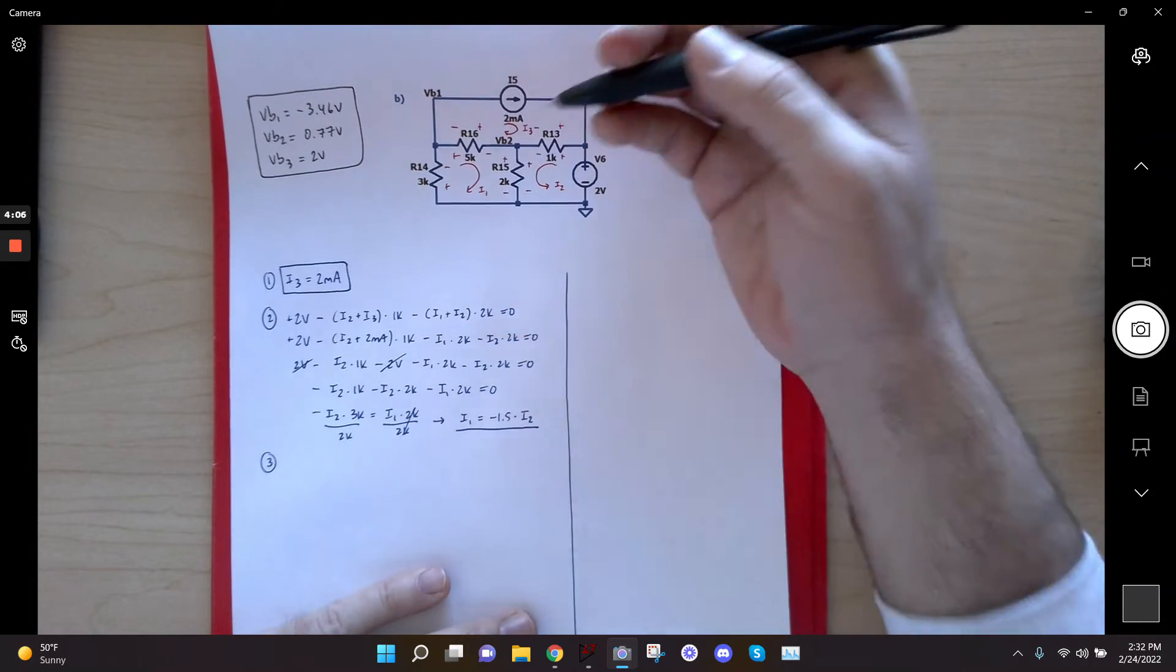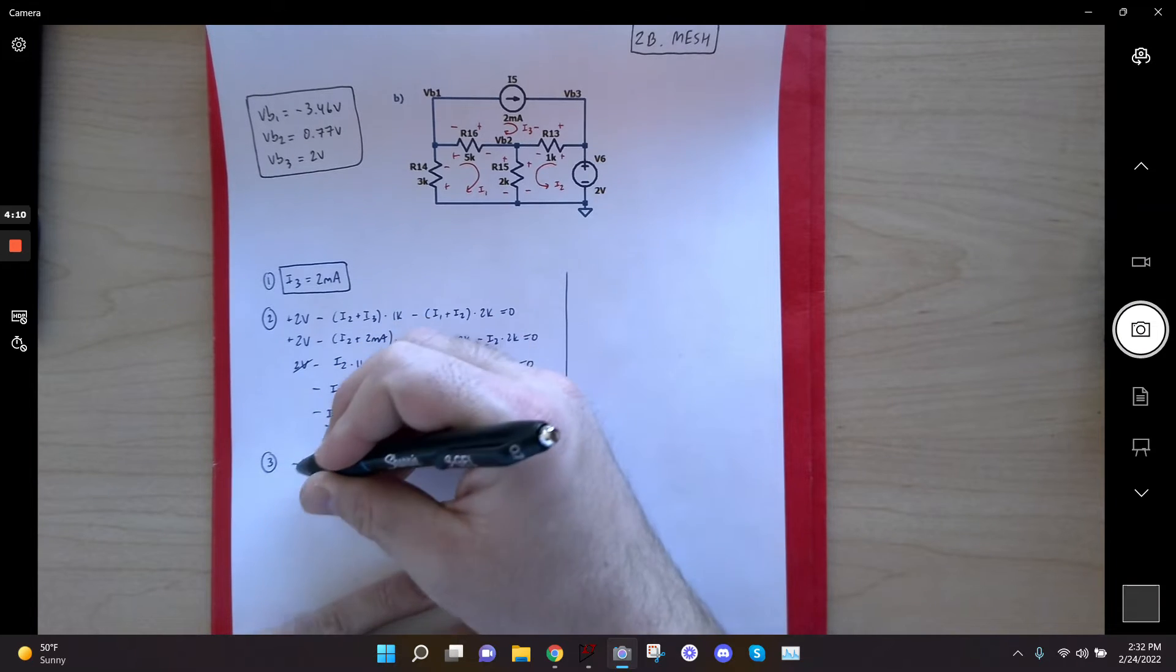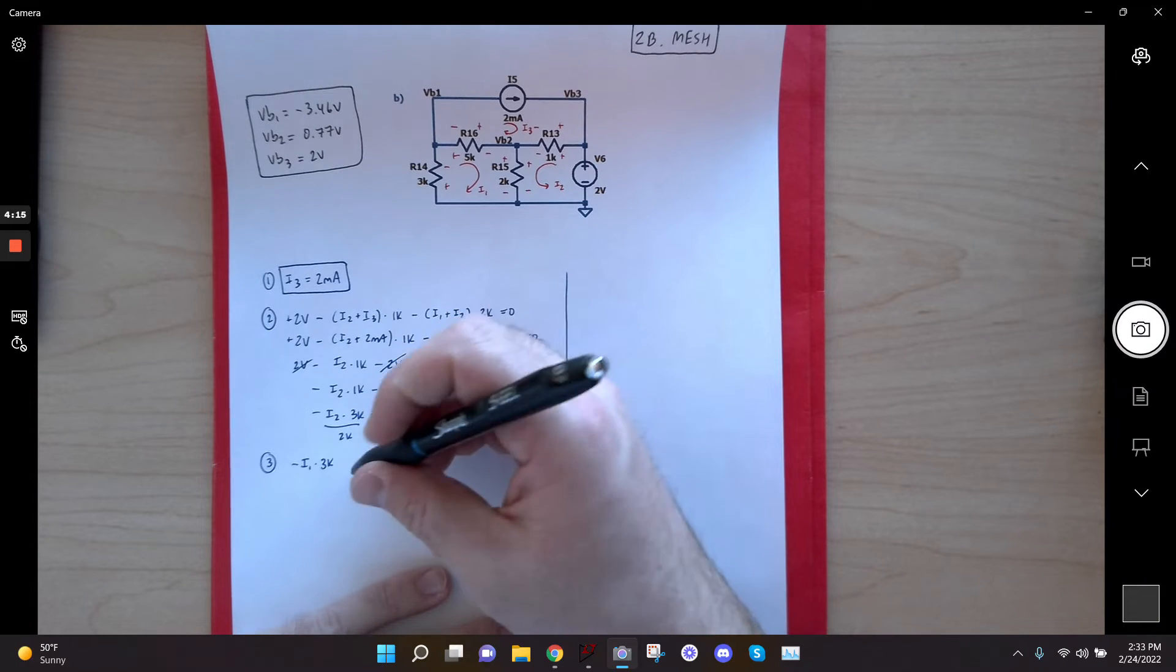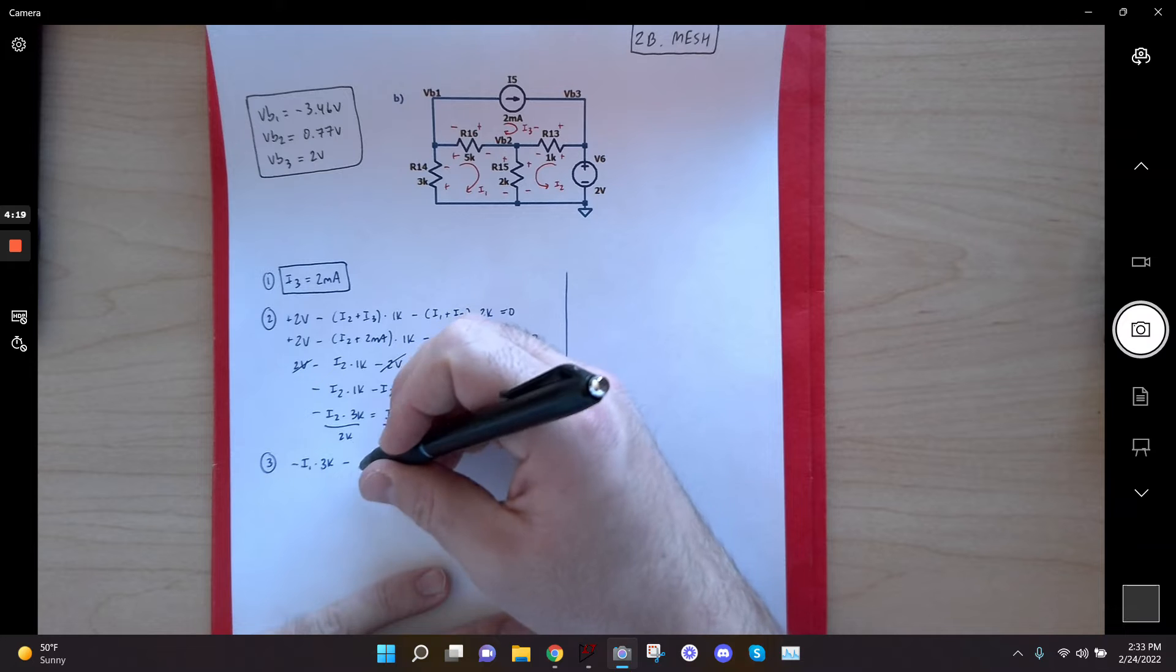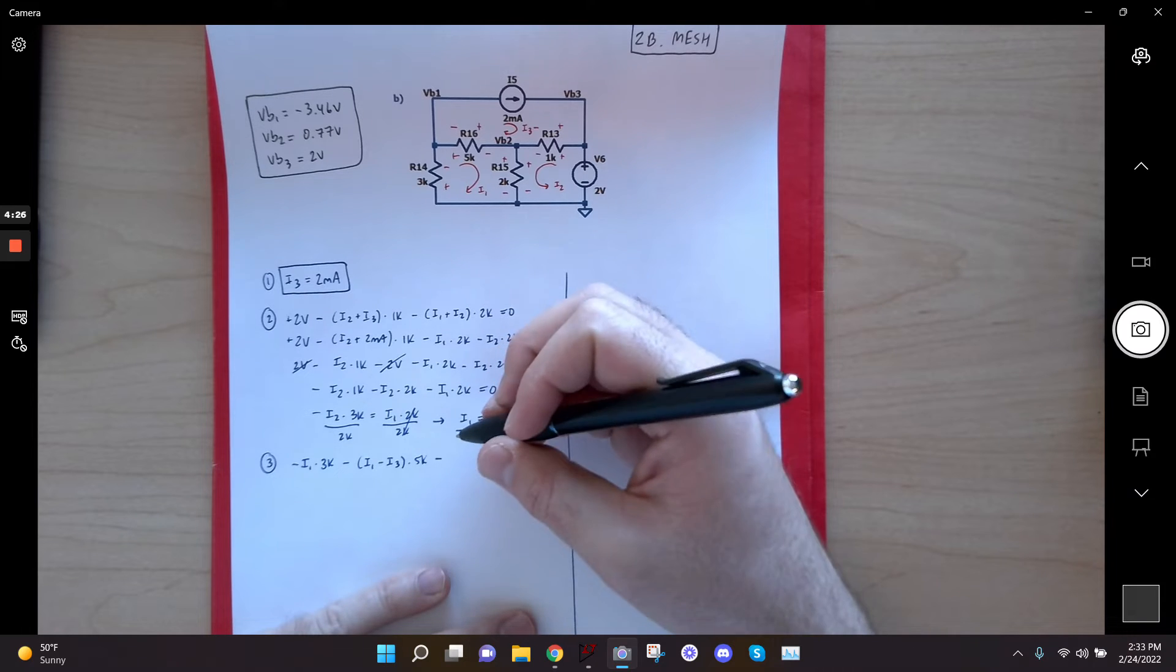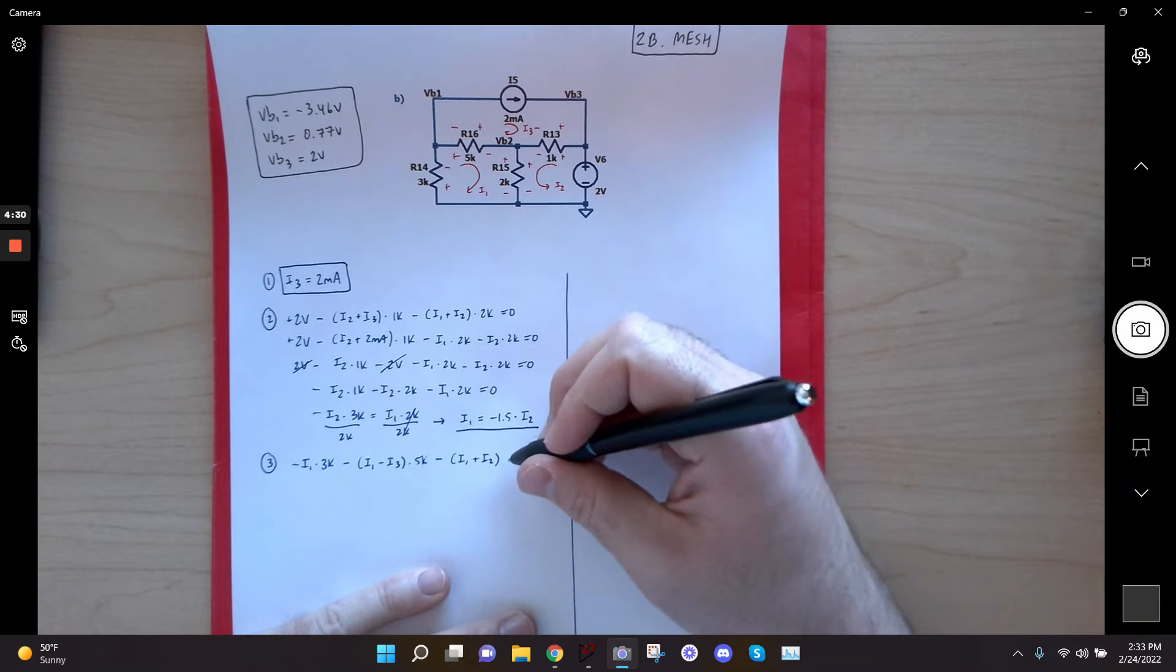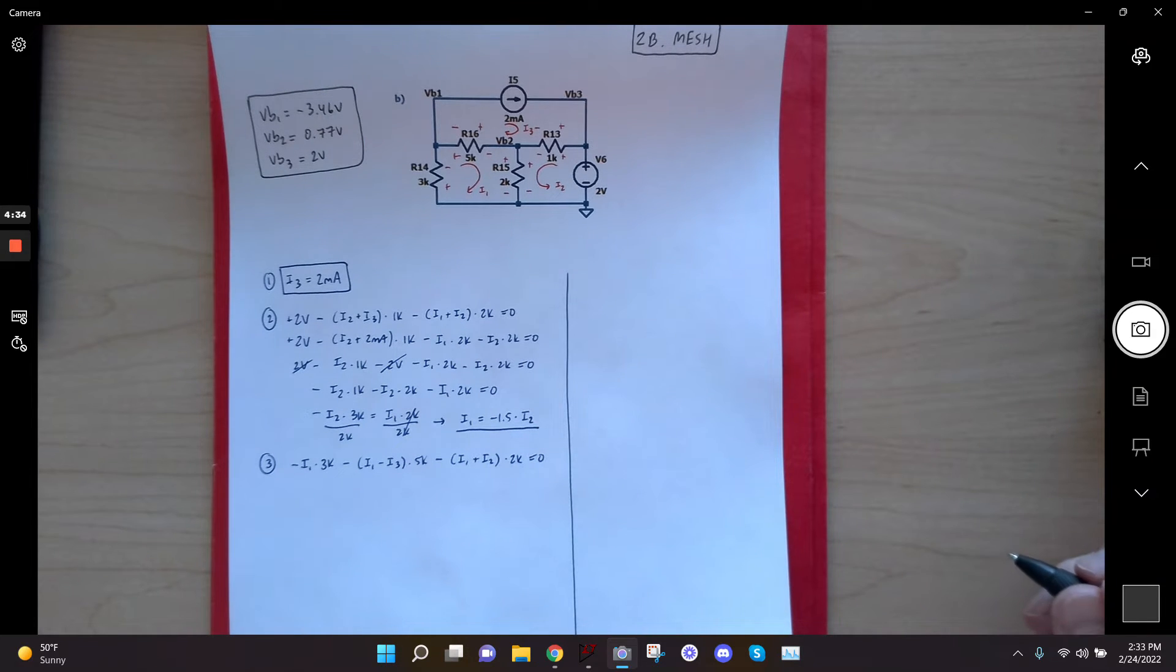So first I drop across this 3K. It's just I1 times 3K. But again, it's a drop, so it's minus. We drop across the 5K. In that case, the 5K, I have I1, but I have I3 moving in the opposite direction. So I would subtract I3, that's times 5K. And then lastly, I drop across the 2K, and I add my I1 and my I2 because they're traveling in the same direction through the resistor, right?